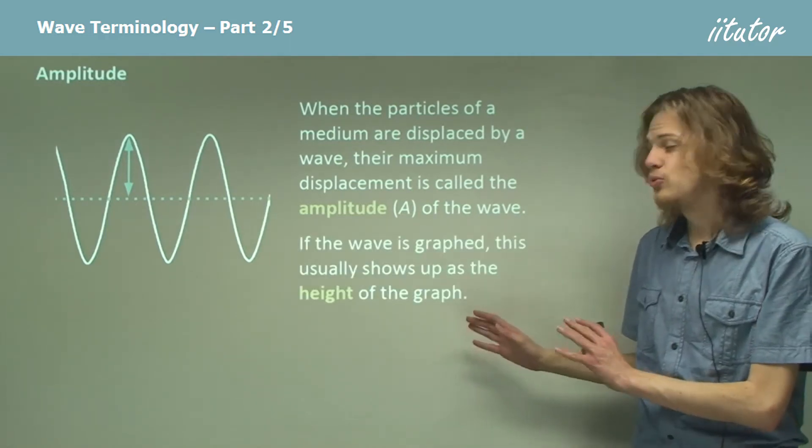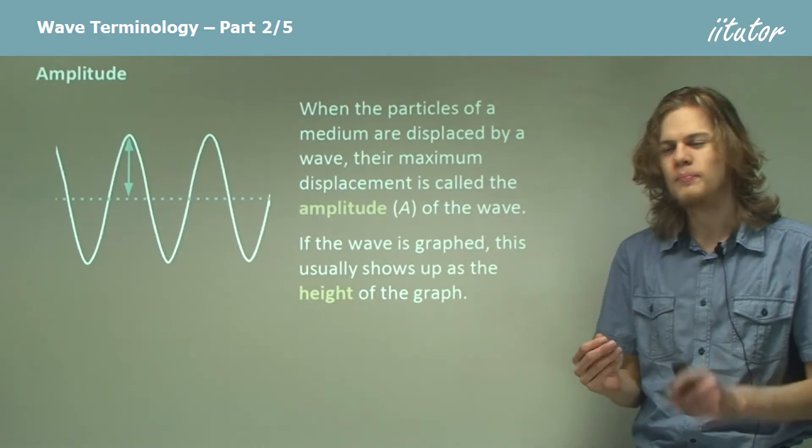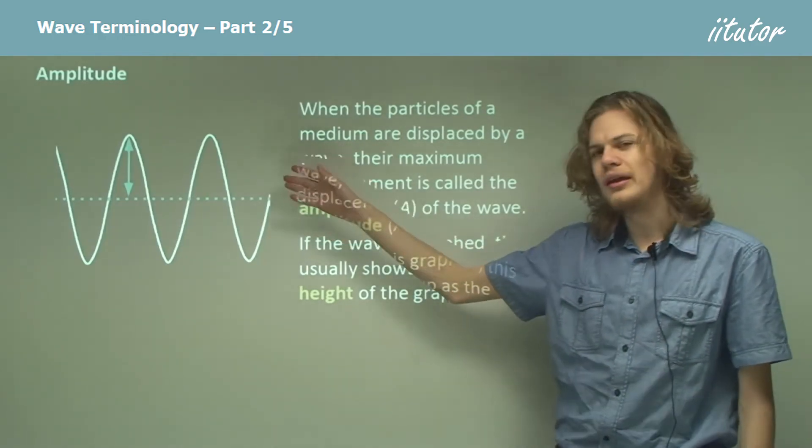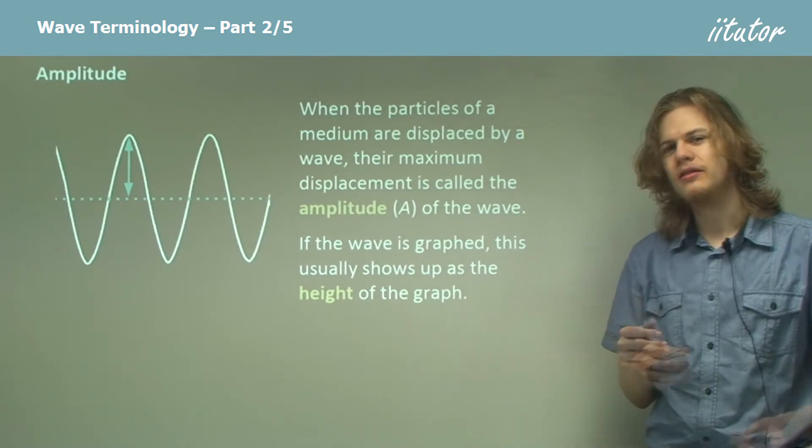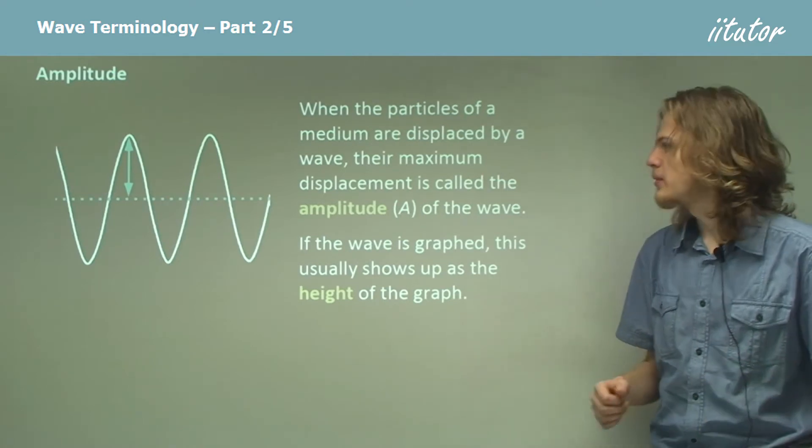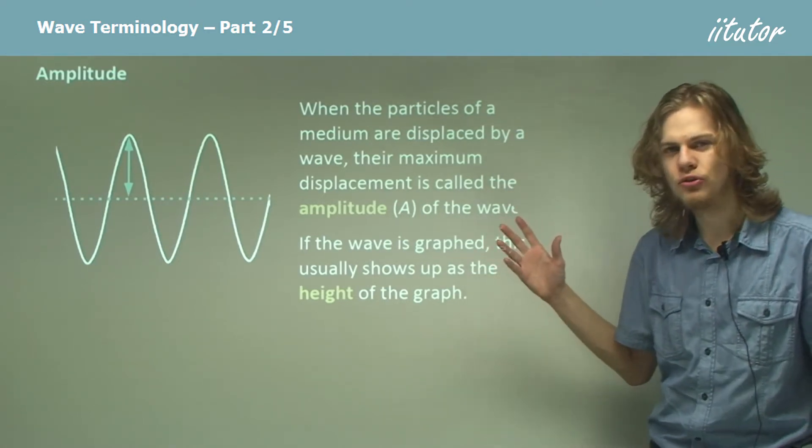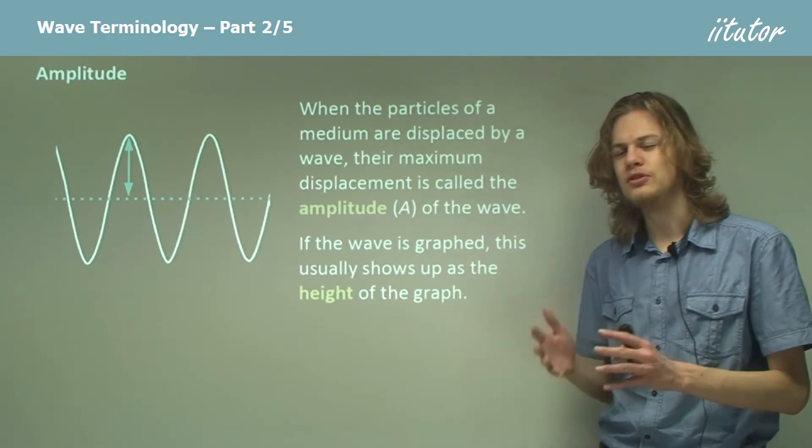So if the wave is graphed, then the height of the graph will be showing the displacement of the wave and so that will show you the amplitude. Of course sometimes waves are plotted with things other than displacement, but displacement is usually what's used and so we can usually measure amplitude from a displacement time graph.